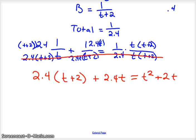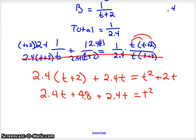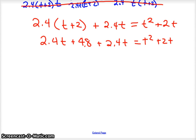Well, I cheated and distributed already, so up here you distribute through and that's how you get t squared plus 2t. Down here, do the same thing, distribute through. So you'd have 2.4t plus 4.8 plus 2.4t equals t squared plus 2t. Now at this point I'm going to get everything moved to the right side of the equation. Well, 2.4t and 2.4t is 4.8t.